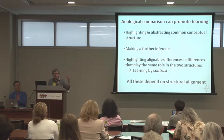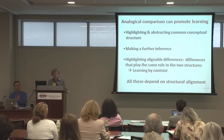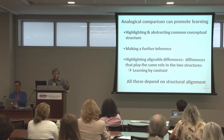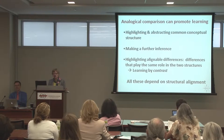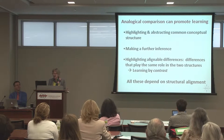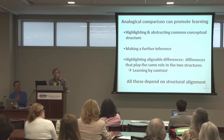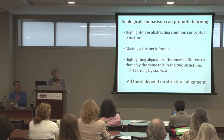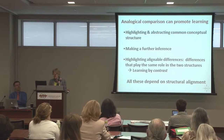Analogy could do at least three things, and sort of routinely does. It can highlight an abstract common relational structure so that it becomes a little more portable, a little more likely to be carried to another future example. It can promote making a further inference from the thing you know more about to the thing you know less about. And it can highlight alignable differences — something of a difference between the two systems that plays the same role in the common relational structure. Once you get that alignment, alignable differences will often pop out, and that can be something we use to promote learning by contrast.